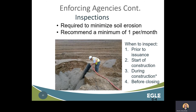The law requires that inspections occur to minimize soil erosion. EGLE recommends enforcing agencies perform a minimum of four inspections per site: prior to permit issuance to confirm minimization of erosion has been considered and the plan matches the actual site; at the start of construction to confirm BMPs are in place and functional; during construction to check compliance with the permit and any changes in site conditions; and before closing out the permit to confirm the site is fully stabilized. If the site has critical or sensitive areas, more inspections may be needed.